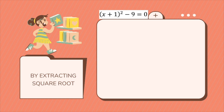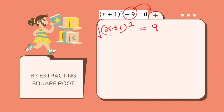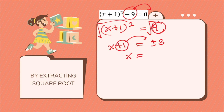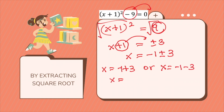Let's take another example. We have x plus 1, in brackets, squared minus 9. Transfer 9 to the other side: x plus 1 squared equals positive 9. Then we take the square root on both sides. We will have x plus 1 equals plus or minus 3, since the square root of 9 is 3. Transfer plus 1 to the other side. Hence, x equals negative 1 plus or minus 3. So x equals negative 1 plus 3, or x equals negative 1 minus 3. Our solutions are x equals 2 or x equals negative 4.